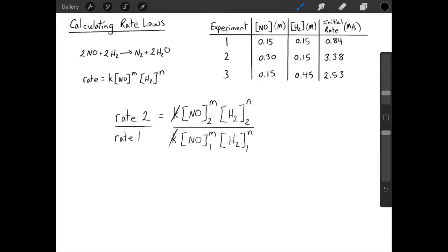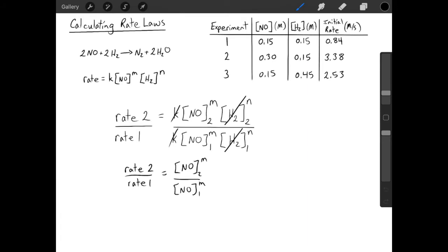We know that the concentration of hydrogen gas is 0.15 in both of these experiments. Raising 0.15 to the nth power is going to be the same in both reaction 1 and reaction 2, so it cancels out. This means we can simplify our expression. Now we can start plugging numbers in from our table and simplify this expression.